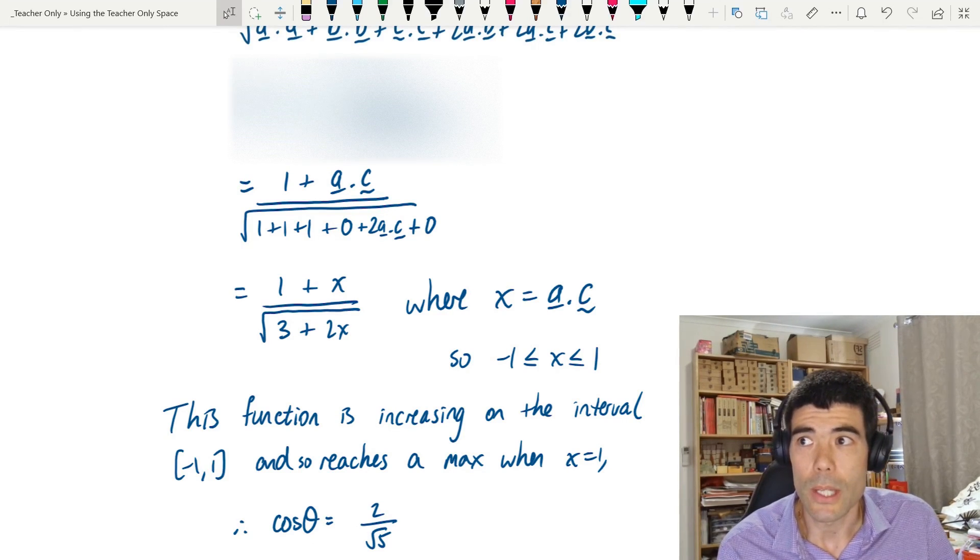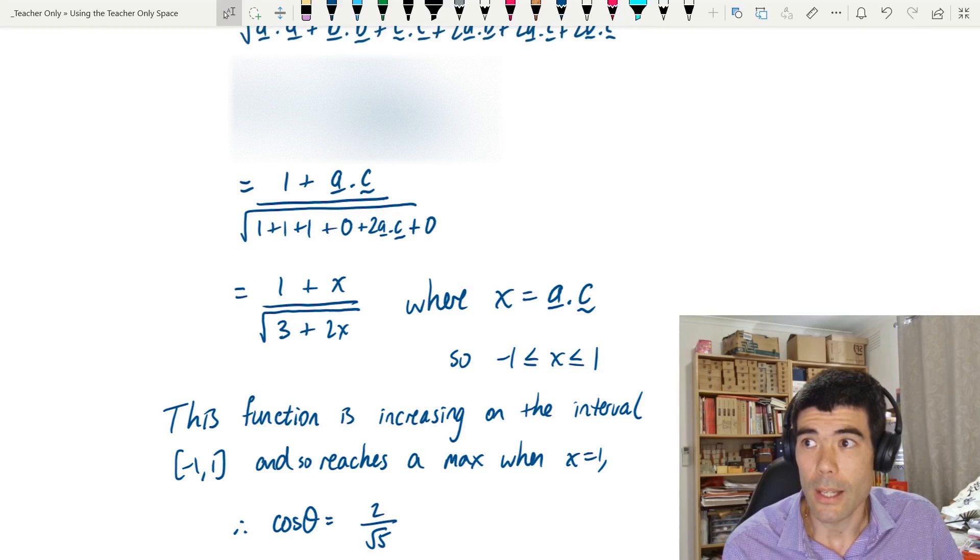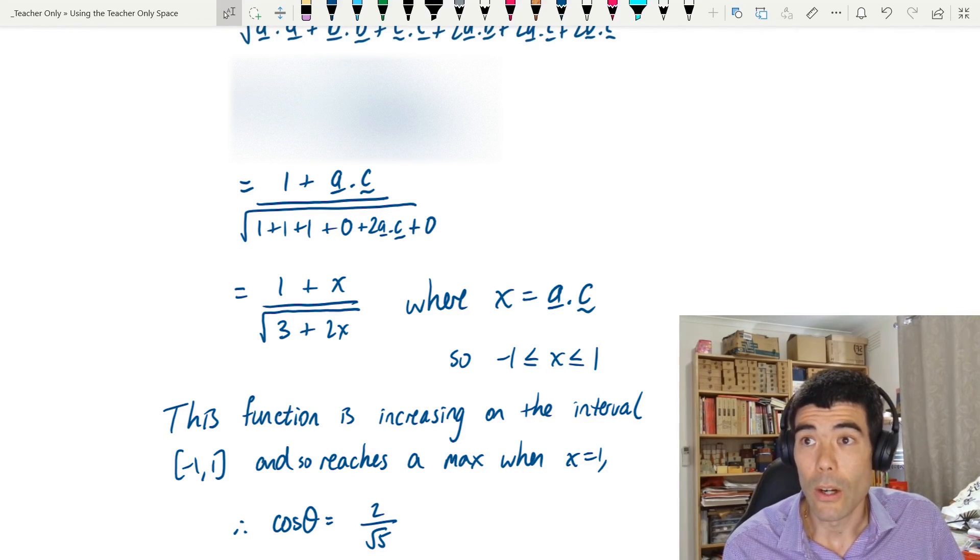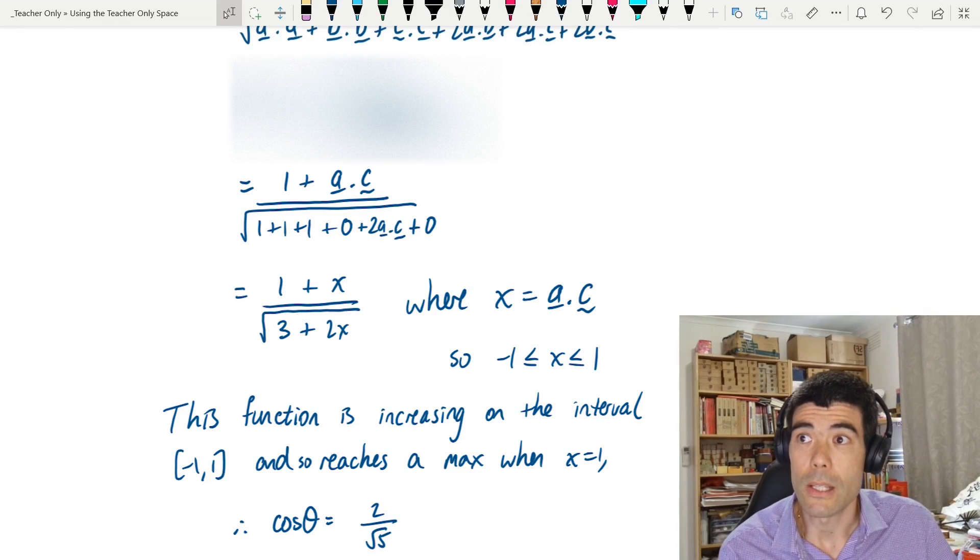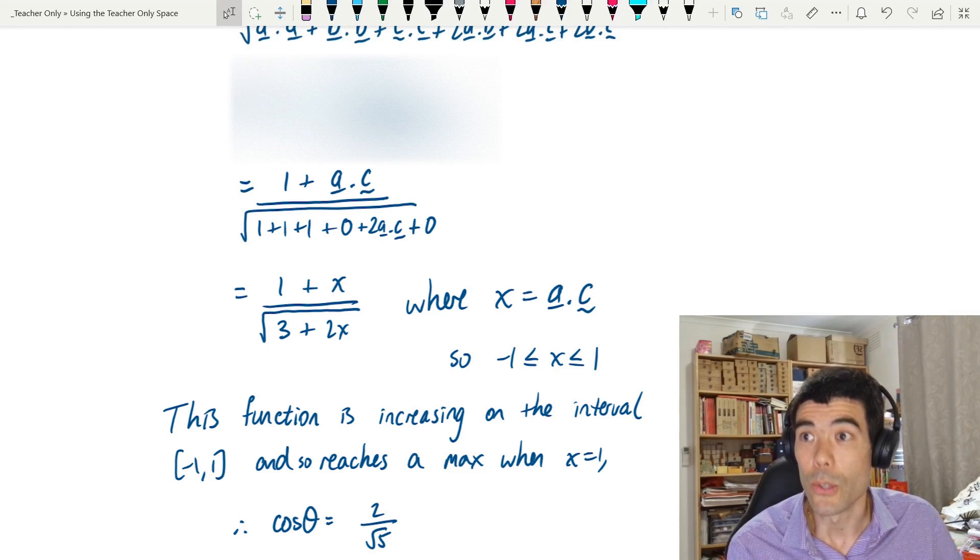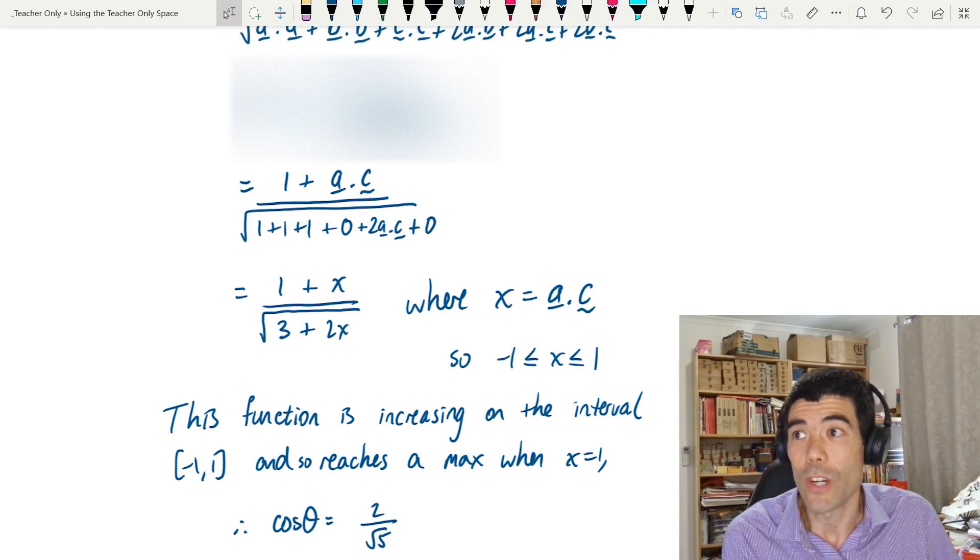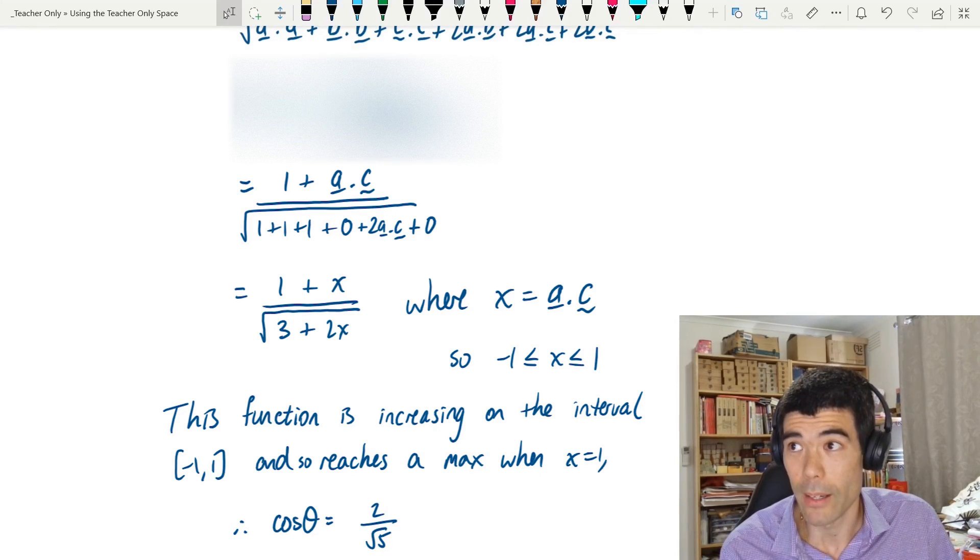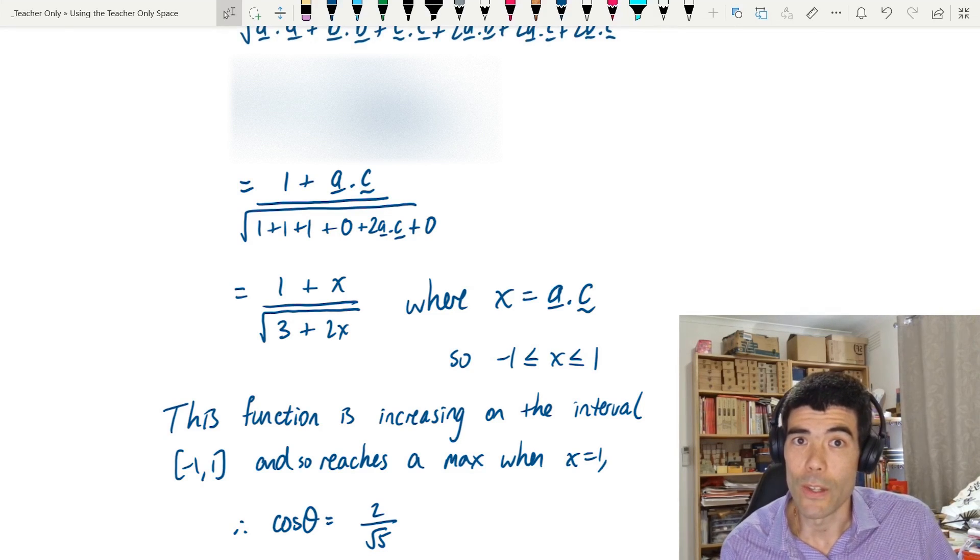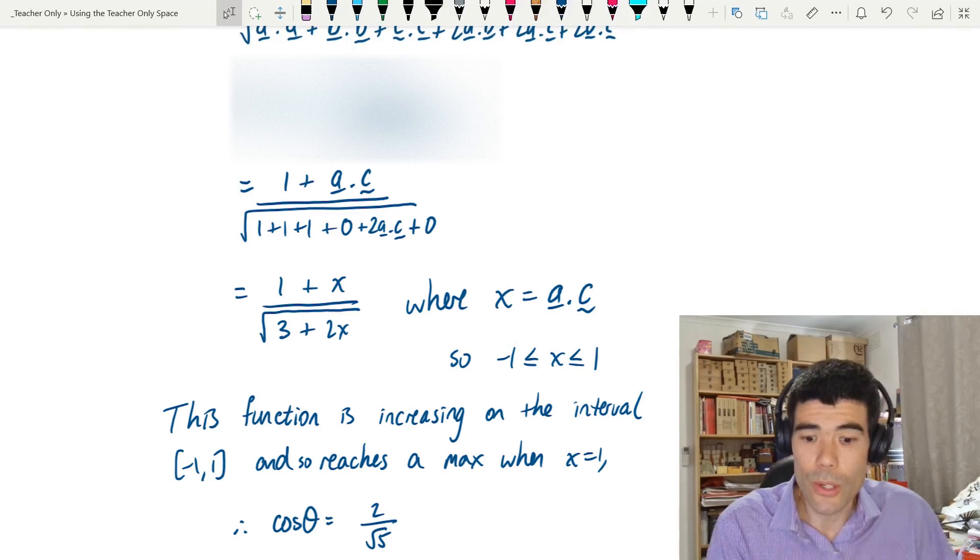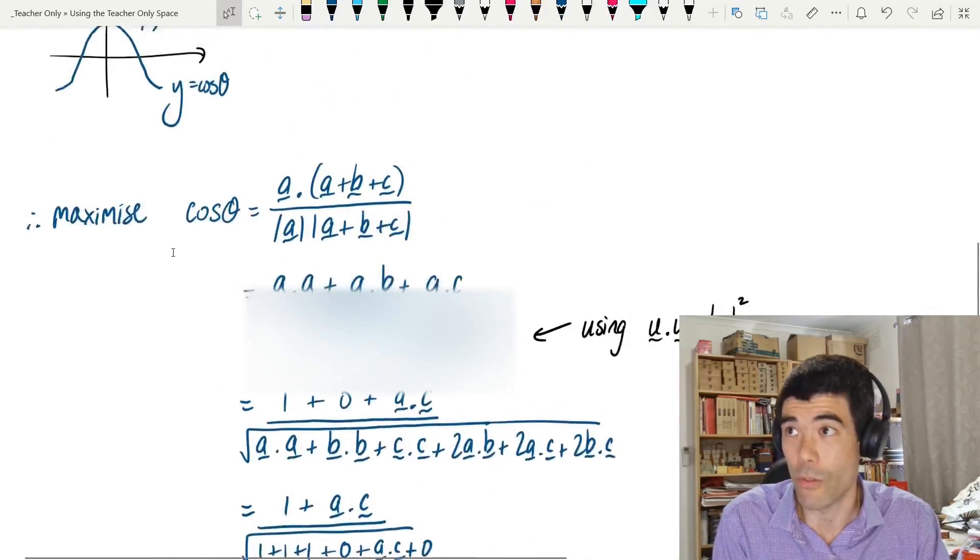And we can show using calculus or otherwise that this function is actually an increasing function, particularly on the interval negative 1 to 1, because x is a dot product of two unit vectors. Its maximum is 1. So this function would actually reach a maximum when x is equal to 1. Substitute it in, we get 2 over square root 5. Yeah, I thought that was quite a nice little multiple choice question on vectors in 3D space.